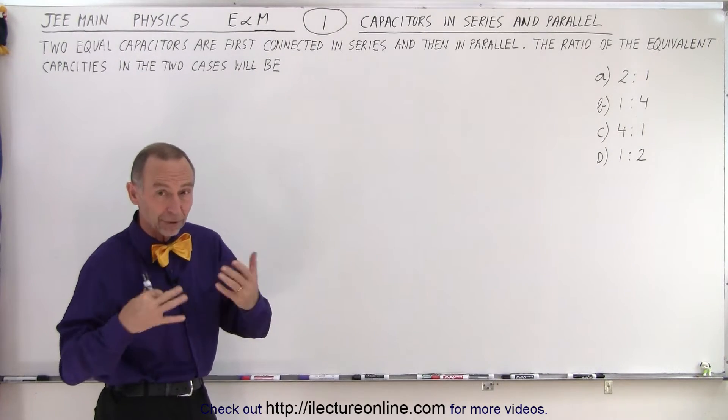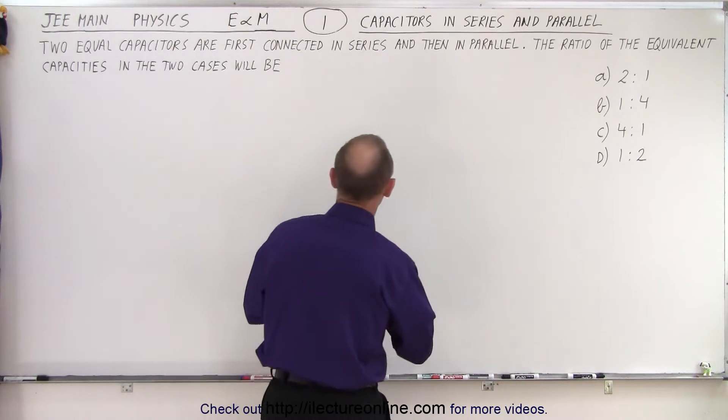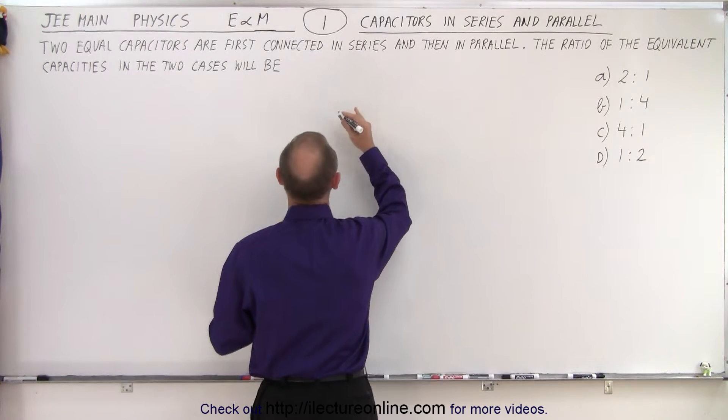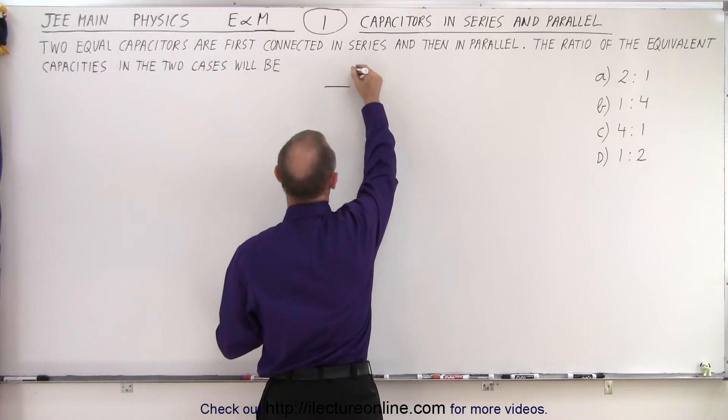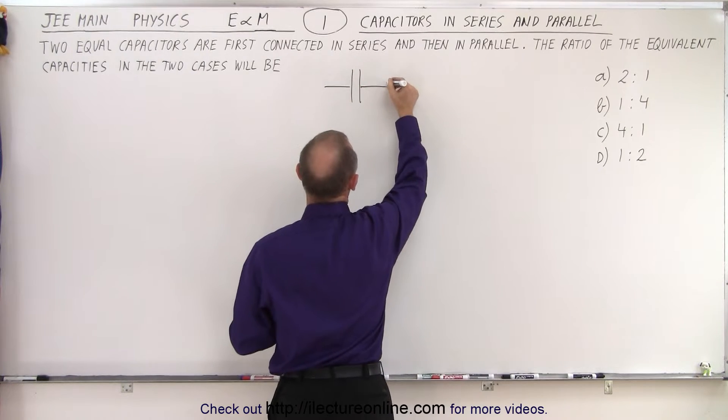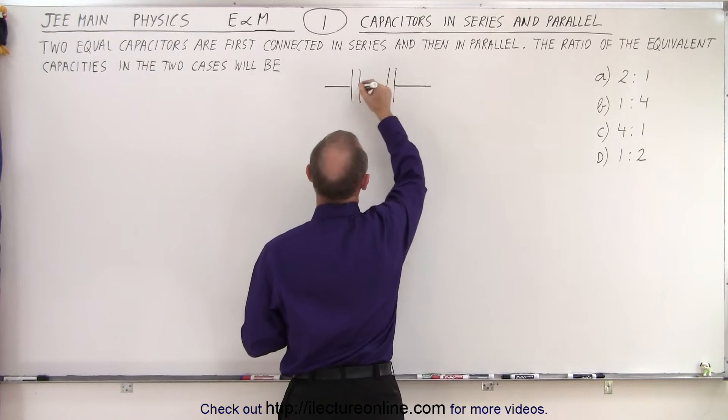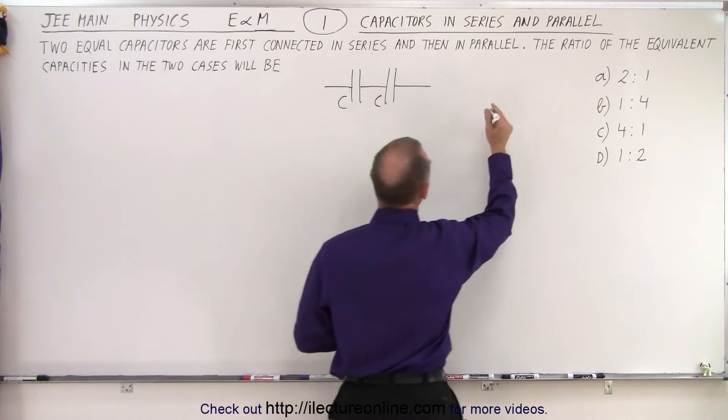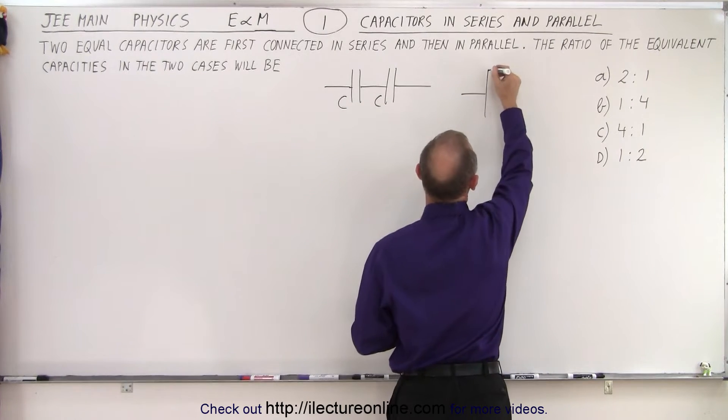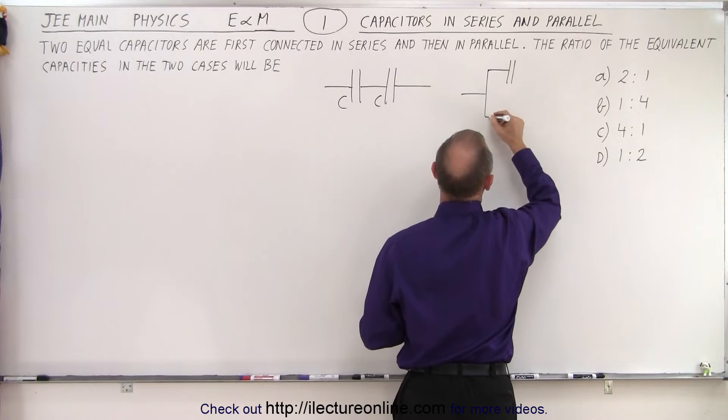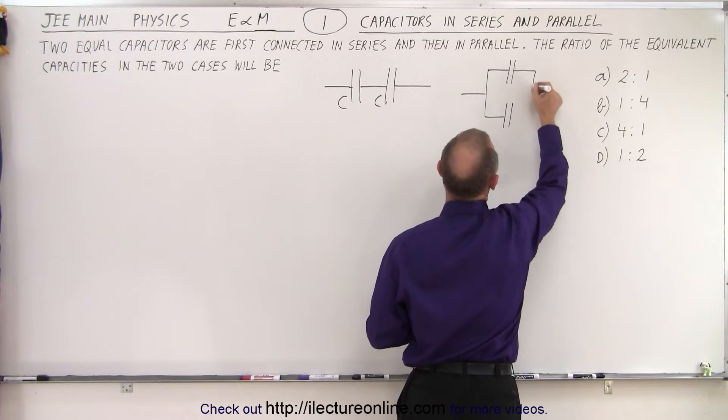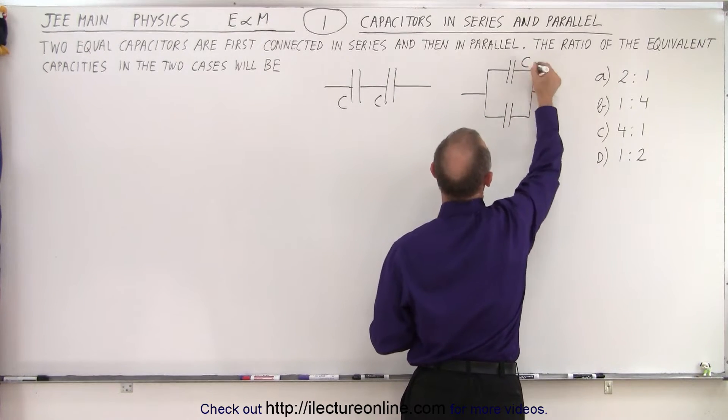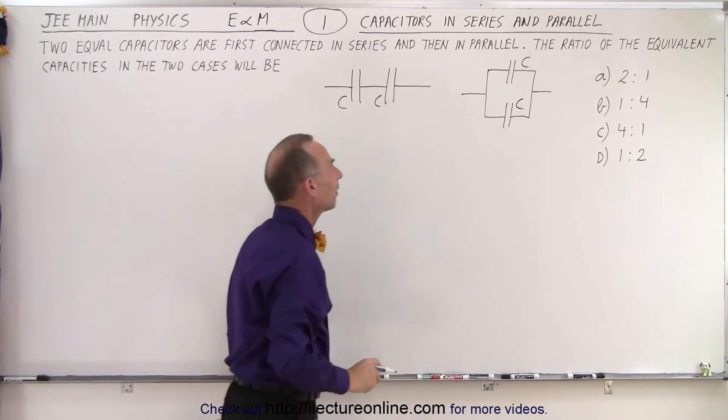So let's draw a quick diagram to get a feel of what's going on. So first of all, we have two capacitors that are first connected in series. And the capacitors are equal in magnitude or equal in size. So there we have C and C. They're the same. And then we connect them in series. So in series, they would look in parallel, I should say. And then they will look like this again. They're the same capacitors.